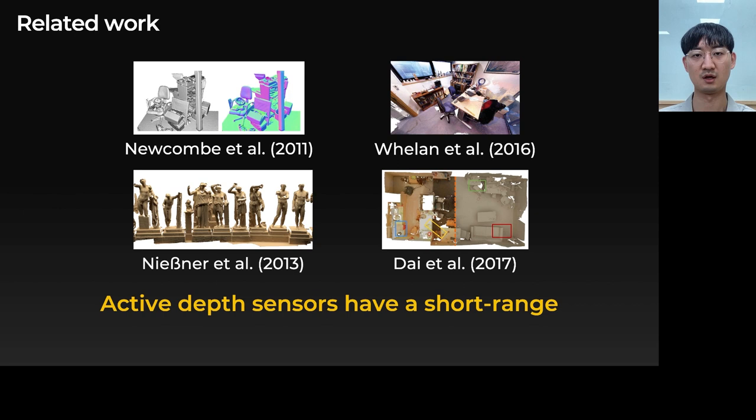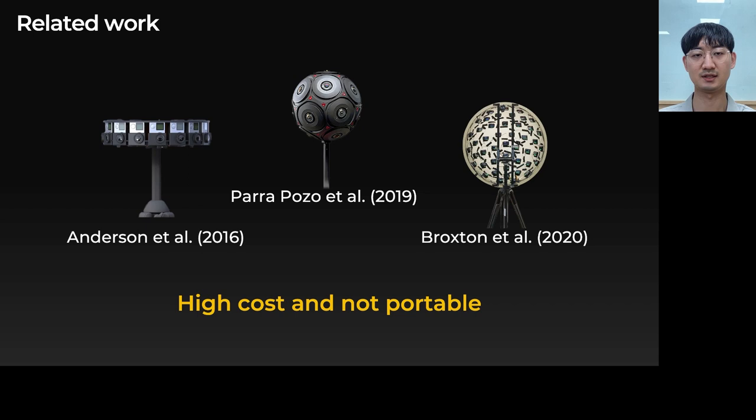Active depth sensors have been widely used for 3D reconstruction because of their accurate and dense depth sensing capability. However, their limited depth sensing range makes reconstructing outdoor scene-scale geometry impractical. On the other hand, 360-degree camera systems can capture scenes with multiple cameras in a passive way, but they are expensive and not portable.